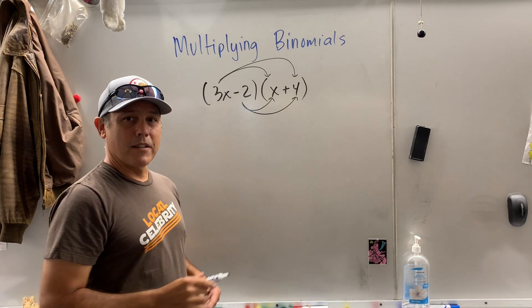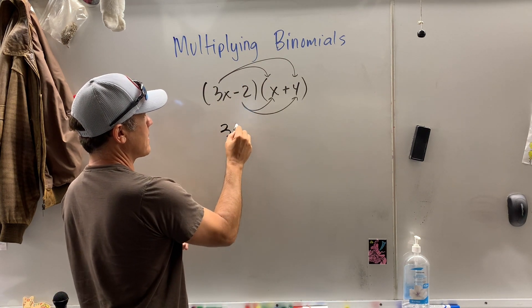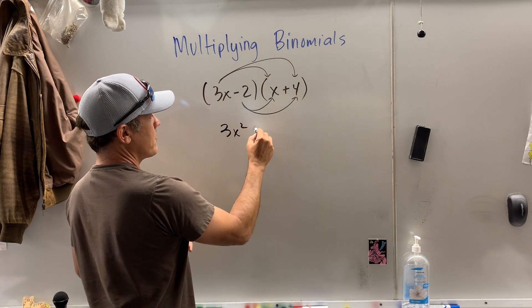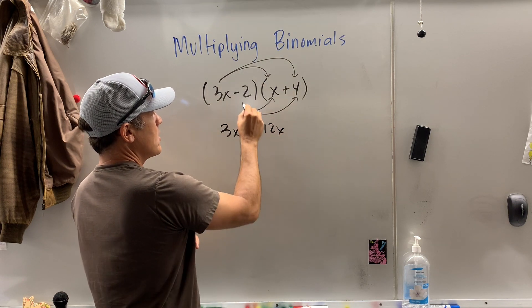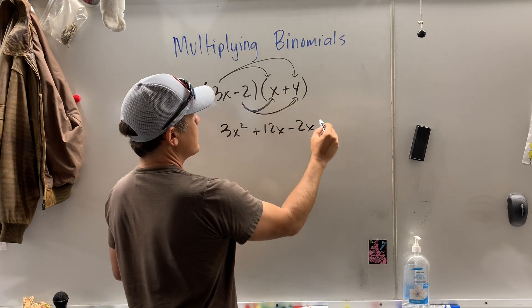So what is 3x times x? 3x squared. What is 3x times 4? 12x. What is negative 2 times x? Negative 2x. And what is negative 2 times 4? Negative 8.